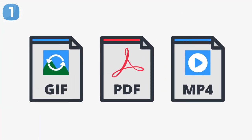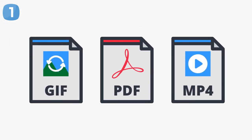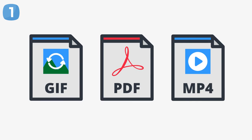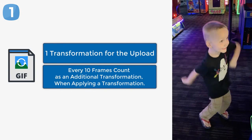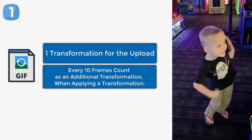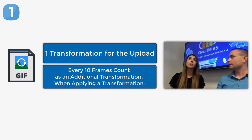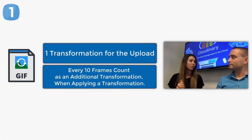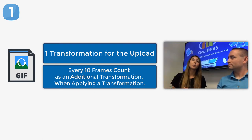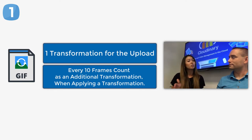Based on certain file types, because of the sheer amount of animations or data associated with them, they may count as more than one transformation. The first example is animated GIFs. Once you upload it to Cloudinary, that's going to count as one transformation, but if it has a lot of frames, you want to remember: when you initially upload it we count that as one transformation, and then for every 10 frames we're going to count an additional transformation. So if you have 20 frames, that's one transformation for the upload, another for the first 10 frames, and one more for the additional 10 frames.